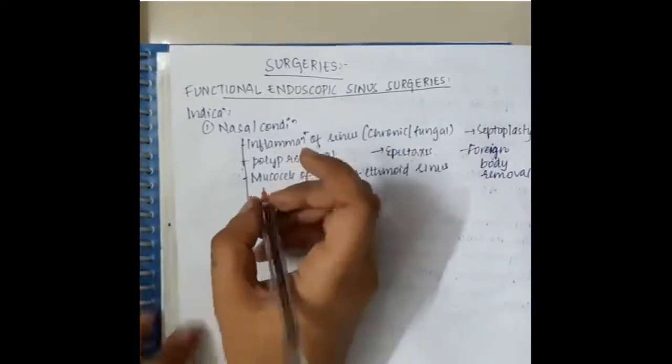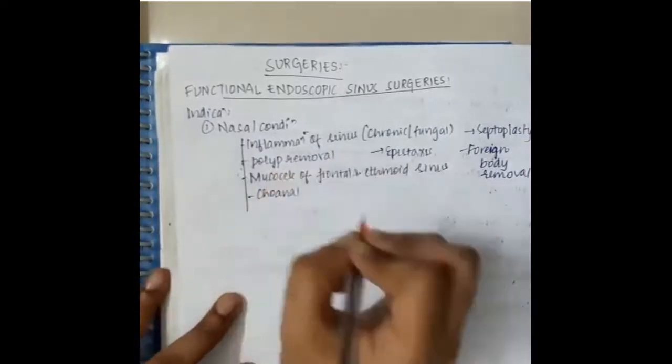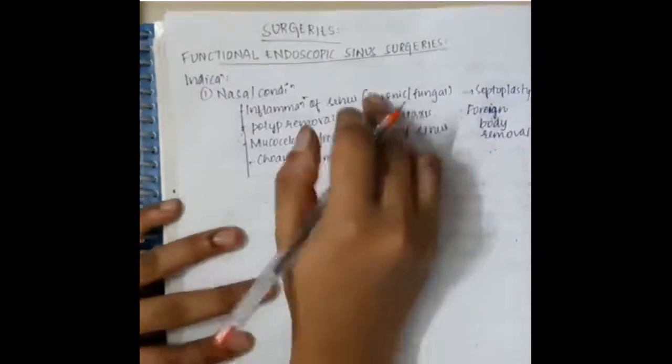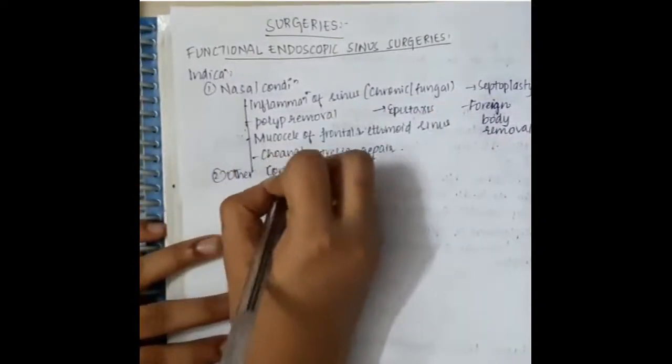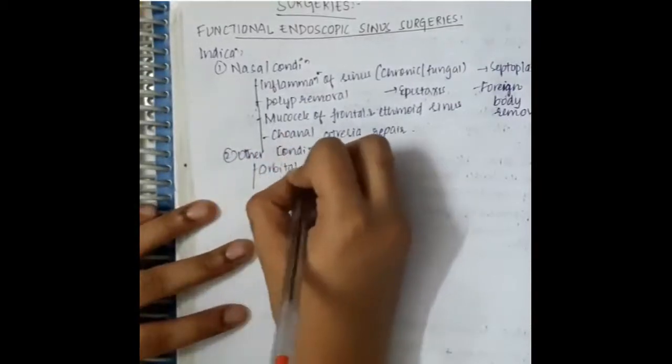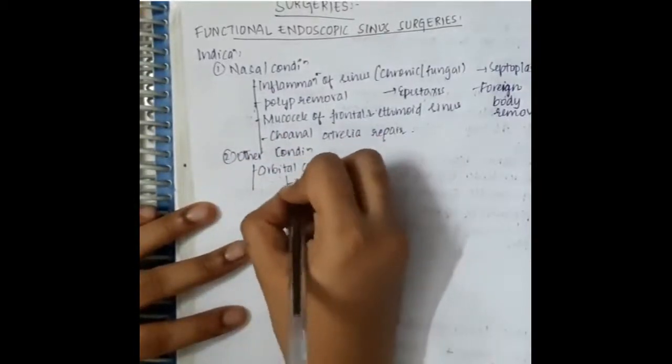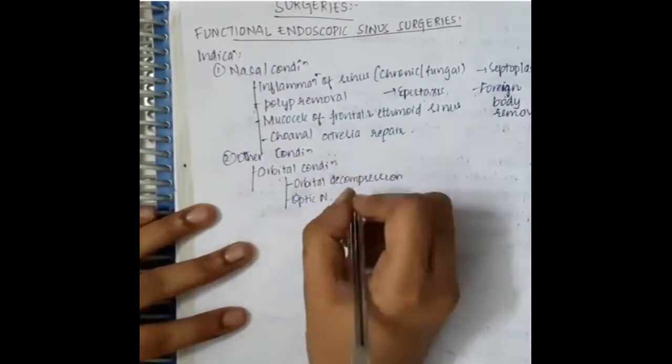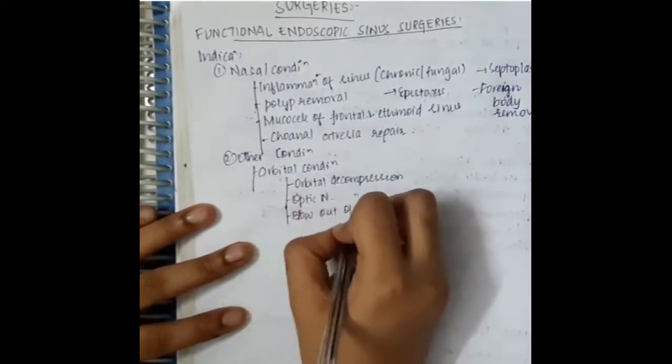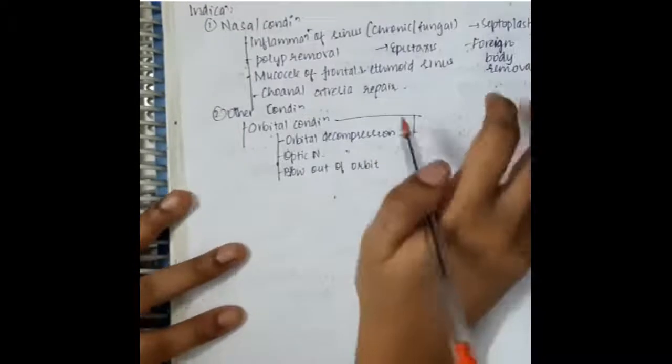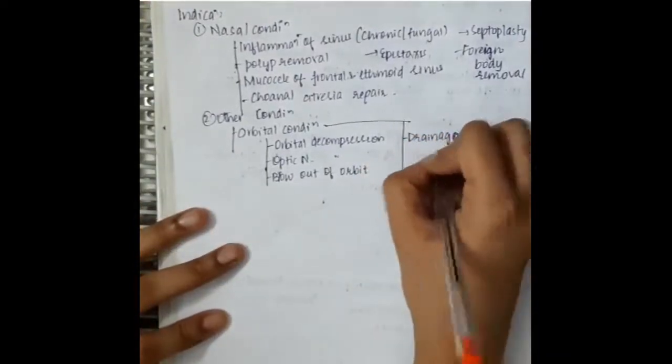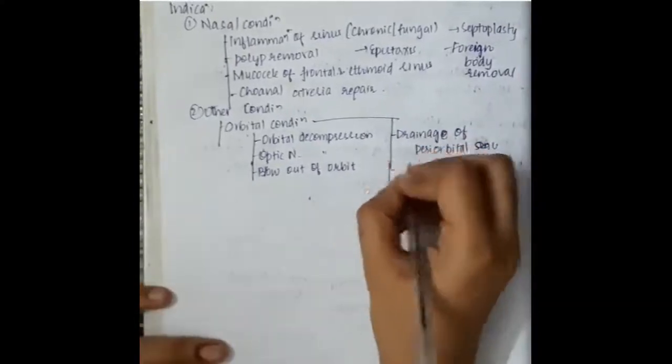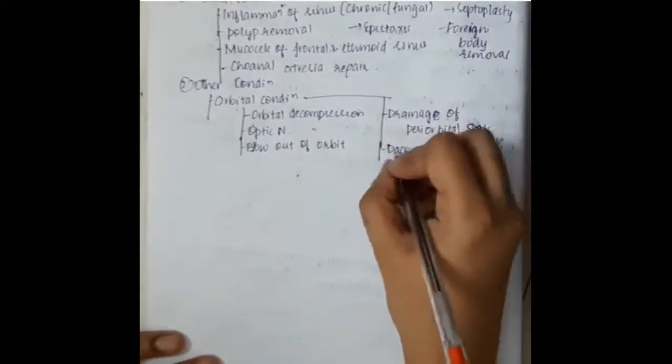It also includes choanal atresia repair. Second, other conditions like orbital conditions, which include orbital decompression, optic nerve decompression, blowout of orbit, drainage of periorbital sinus and abscess, and surgery of dacryocystorhinostomy.